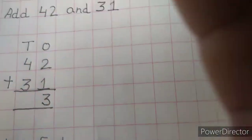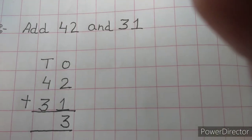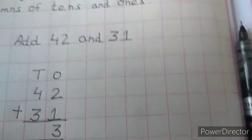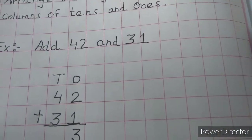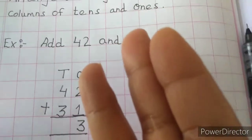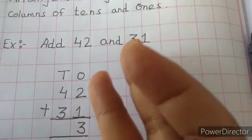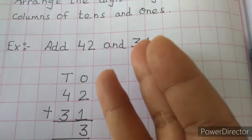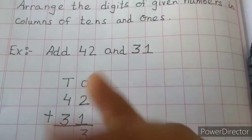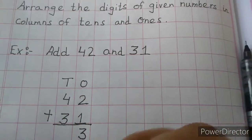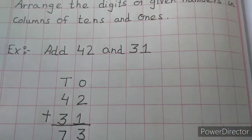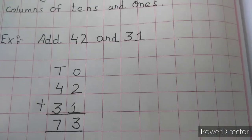Similarly, in the tens column the two digits are 4 and 3. We put 4 in our mind and put 3 fingers up. After 4, counting forward: 5, 6, 7. So we write 7 in the tens column. The answer is 73.